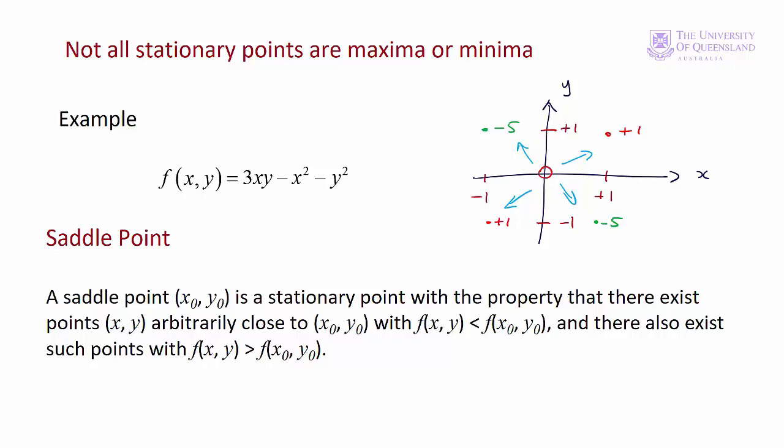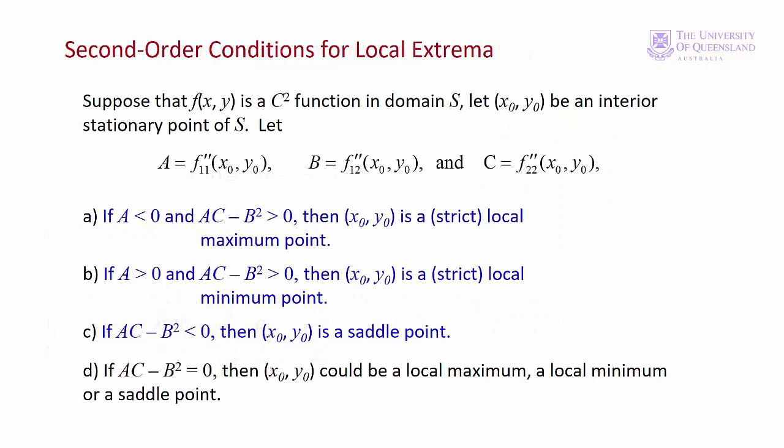How do we tell which is which? Of course, we look at the second-order conditions. The second-order conditions for local extreme points are similar to the second-order conditions for global extreme points that we considered in Module 2. Once again, the function f is a C² function — that is, it must be twice differentiable. In other words, all the second-order partials must exist and be continuous. We have an interior stationary point x₀, y₀. To make the exposition of the conditions simpler, the second-order partials are often represented by letters. Our textbook uses A for F₁₁, B for F₁₂ and F₂₁, and C for F₂₂. The first two conditions are similar to the global extreme point case.